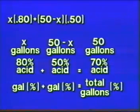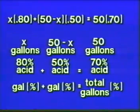Substituting actual numbers: X gallons times 80% (or 0.80), plus (50 minus X) gallons times 50% (or 0.50), equals 50 gallons times 70% (or 0.70). To eliminate decimals, we multiply each term by 100, sliding the decimal two places to the right. So we have 80X plus 50(50 minus X) equals 3,500. Expanding: 80X plus 2,500 minus 50X equals 3,500. Collecting on the left gives 30X, and subtracting 2,500 on both sides gives 1,000 on the right. Dividing both sides by 30, we find X equals 33.3.